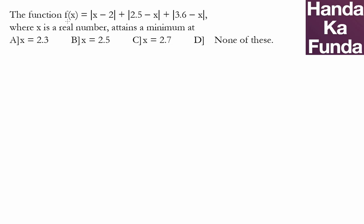In this particular question we are supposed to find out the minimum value of f(x). Now the first thing that you should realize is that f(x) is |x - 2| + |x - 2.5|. Instead of |2.5 - x|, I have written it as |x - 2.5|.